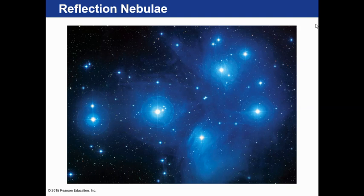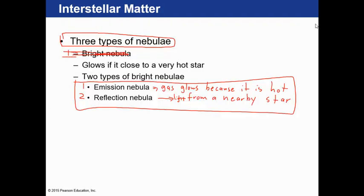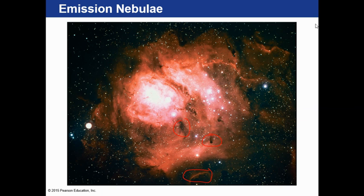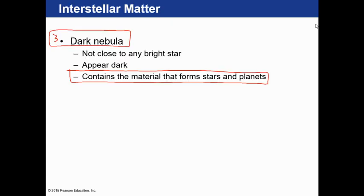Those blue stars are actually much hotter and much brighter than our own star—we'll learn about that in a second. There are three types of nebula. An emission nebula, where the gas glows because it's hot. A reflection nebula, lit by light from a nearby star. And dark nebulae, which are dark because the gas and dust is so dense that light can't get through. So areas in space that look dark—particularly in our own galaxy—aren't empty; it's just that light can't get through the dust.